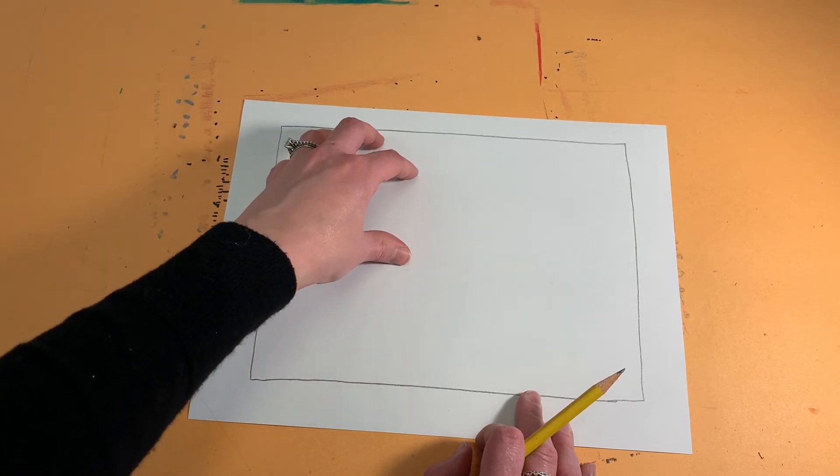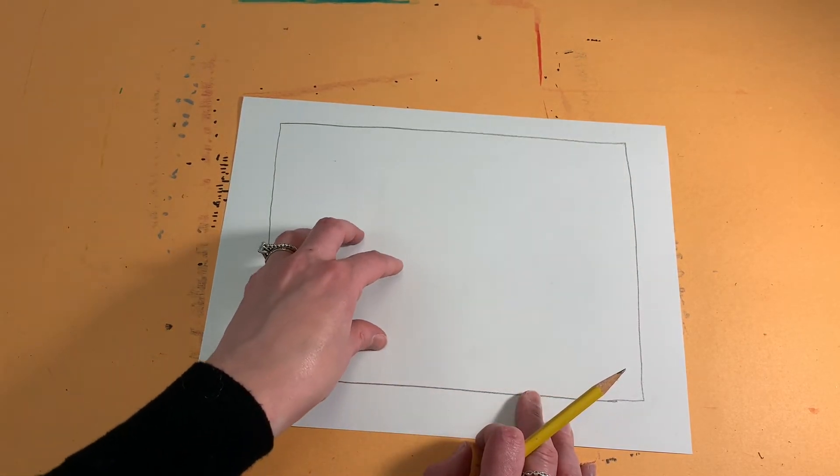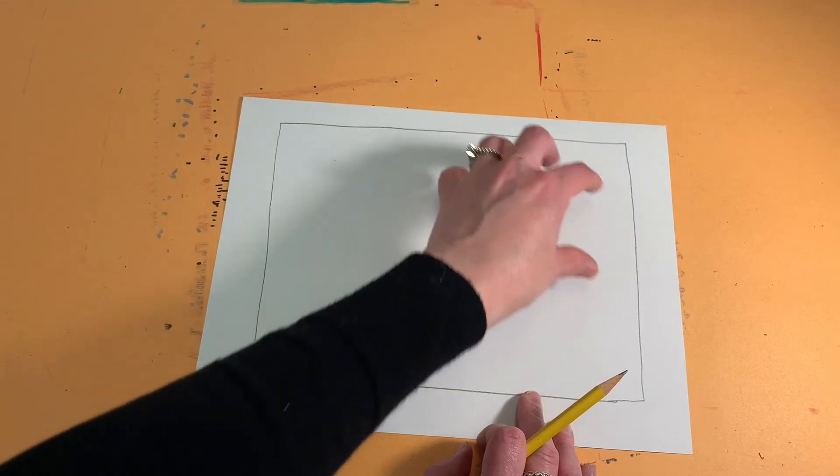So let's sort of plan out where we're going to put each of our doughnuts. So one in this corner, this corner, here, and here.